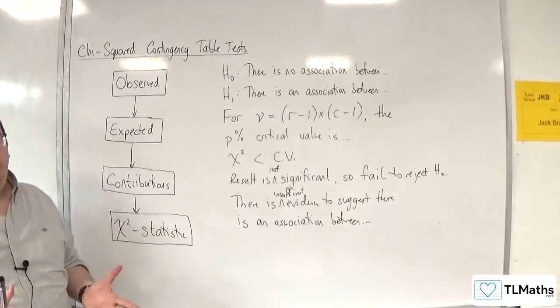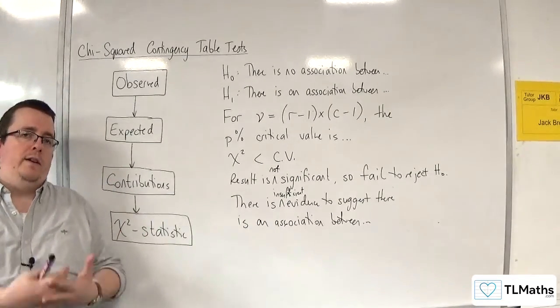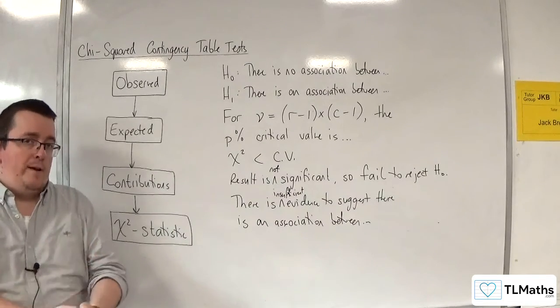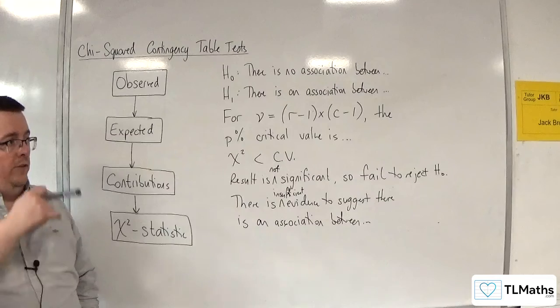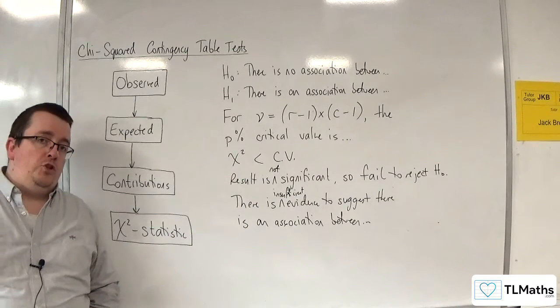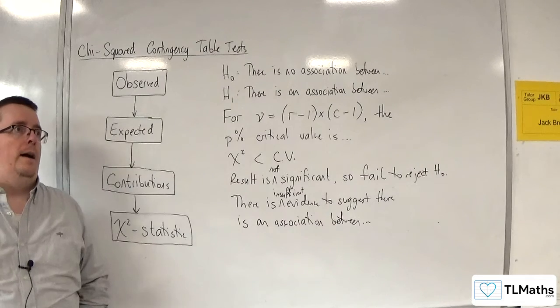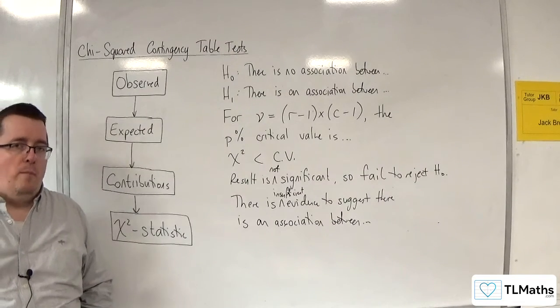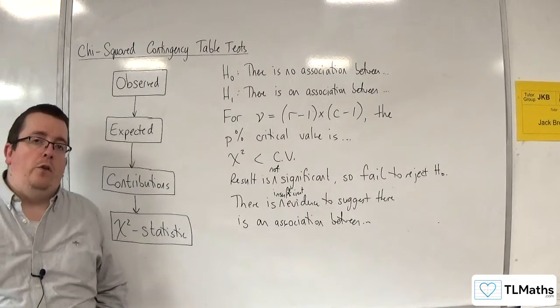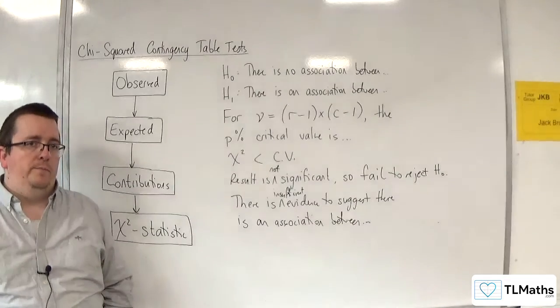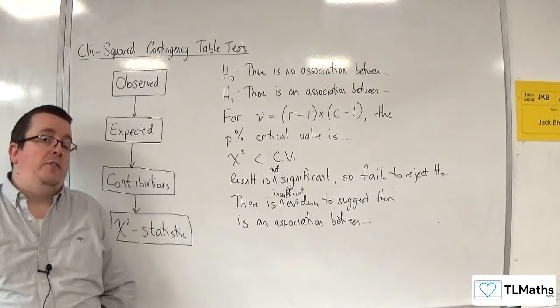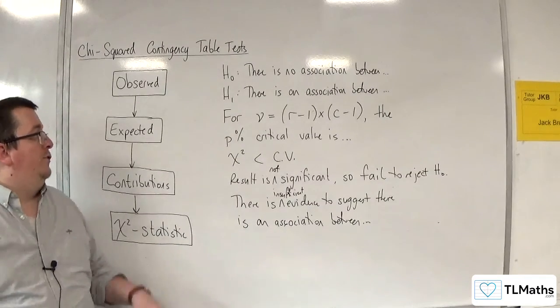And in a nutshell, that is the chi-squared contingency table test. Now, given the amount of time that the exam actually has, so 1 hour and 15, these questions can go on for quite a while. Now, it's probably unlikely that you would have to do the full thing if it was a 3x3 table. But that's not ruling it out. It's just unlikely because of the amount of time that it takes to do this bit.